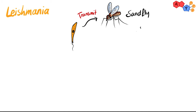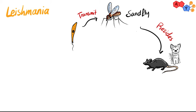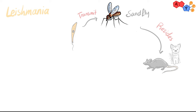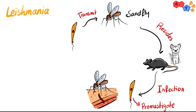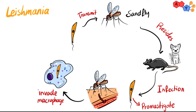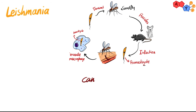Leishmania is transmitted via sand flies and resides in animal reservoirs such as rodents or dogs. The infected sand fly carries the promastigote form of Leishmania, which is flagellated. It infects the host through the blood and grows in macrophages in the form of amastigotes, which lack a flagellum. This amastigote form is the diagnostic stage of Leishmania.